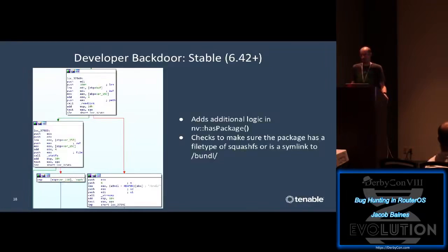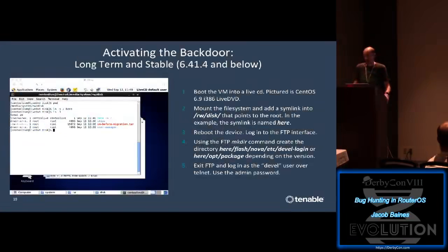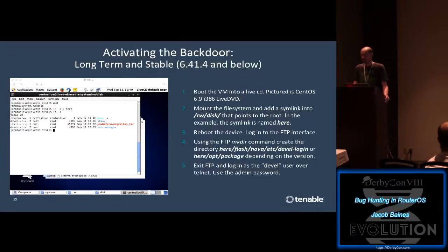From 6.42 upwards the backdoor logic is the same as 6.41.4, but has_package has extra checks - specifically it verifies that package/option has a filesystem type of squashfs, or that a symlink points to the bundle directory. That doesn't sound problematic, but you'll see in a few slides that it is. Since normal users don't have access to the underlying filesystem, virtualization really helps: we can just boot the VM into a live CD, mount the filesystem, and create files as needed.